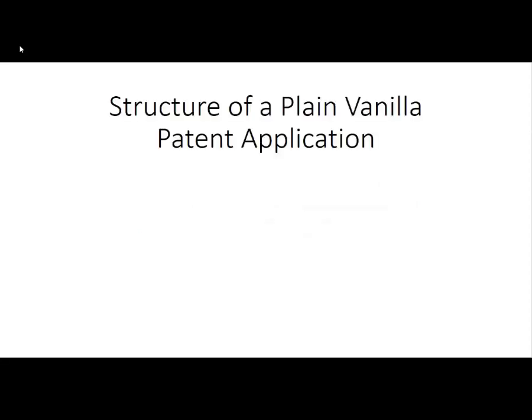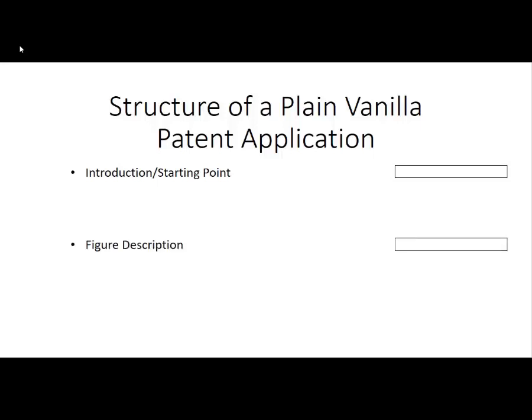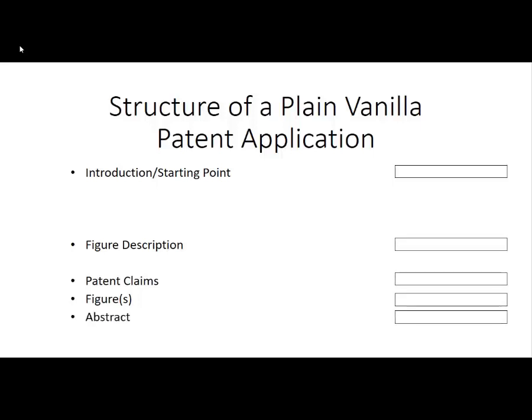Let's look at the structure of a plain vanilla patent application. This is what every patent application in this world has. In the first place we have an introduction or a starting point. Then we have a figure description which comes together with one or more figures, and we have patent claims. Very often there is an abstract, because this is a prerequisite when you file a patent application.